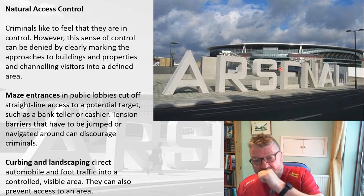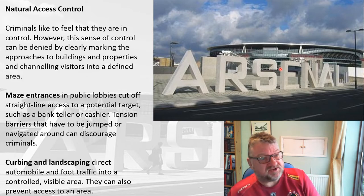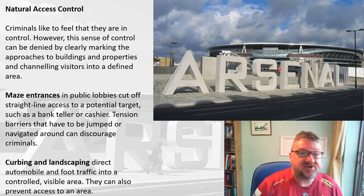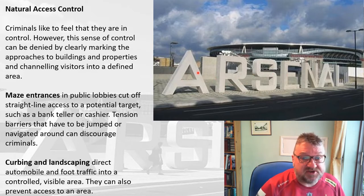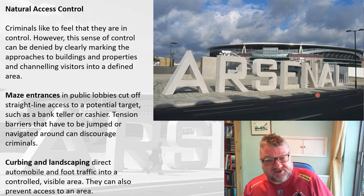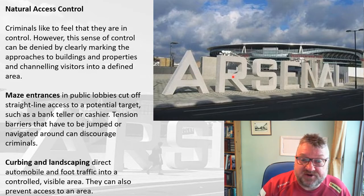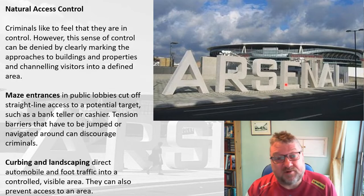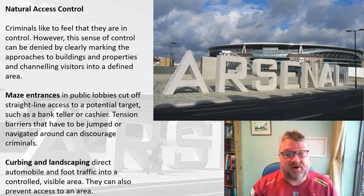The picture of the Emirates Stadium on the front of this PowerPoint is actually an example of CPTED and natural access control. The large concrete Arsenal lettering outside the stadium is a deliberate attempt to stop vehicle access — fans congregate behind it. Given recent instances of terrorists driving vehicles into crowds, this concrete structure prevents that: a lorry would simply hit the concrete. This is a deliberate natural access control measure built in by the stadium's designers.